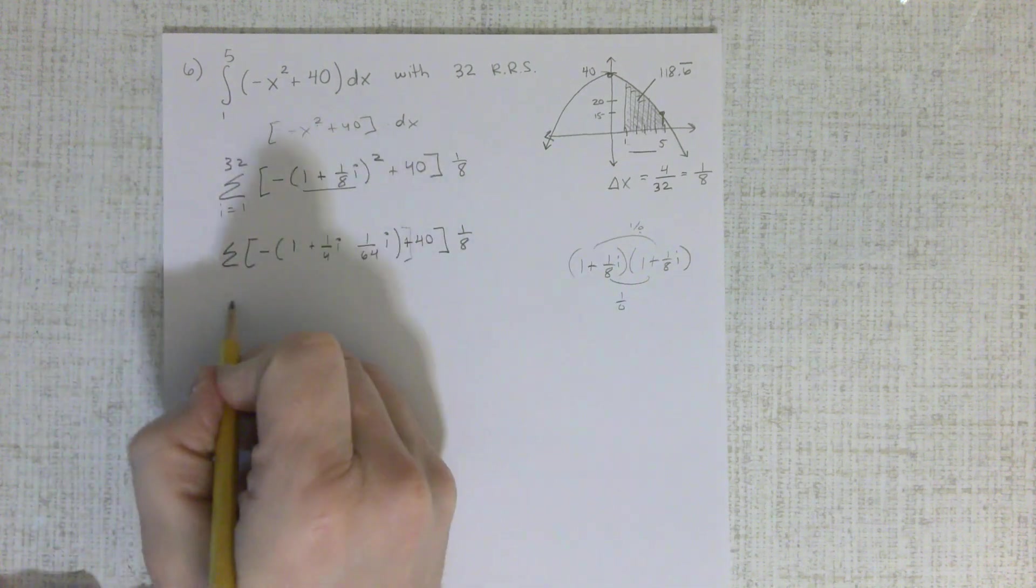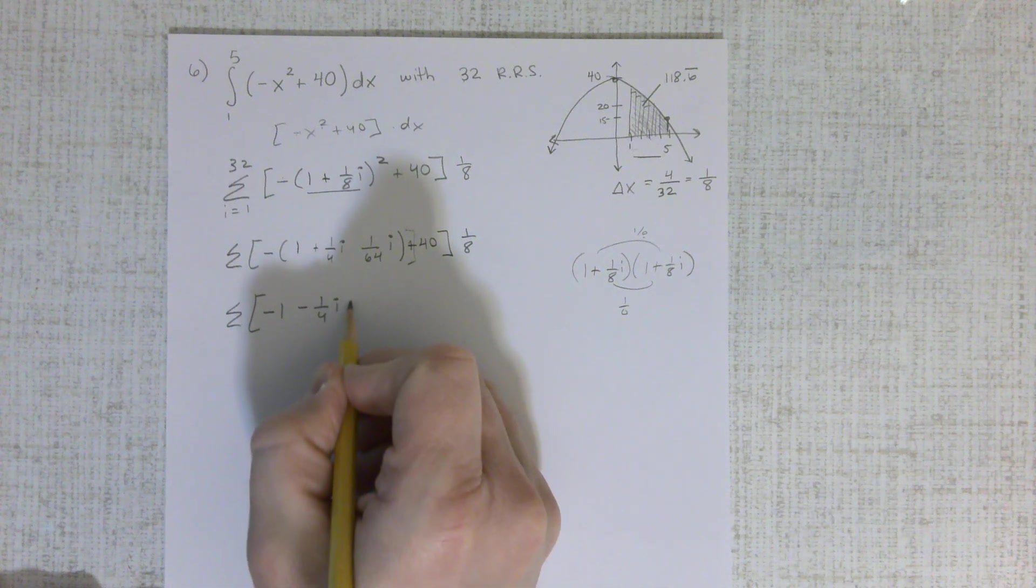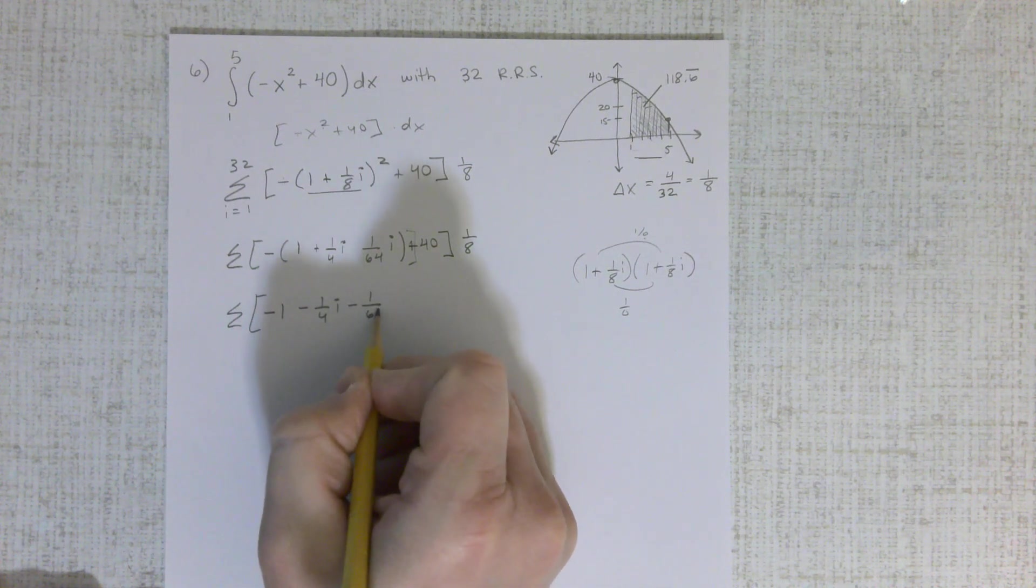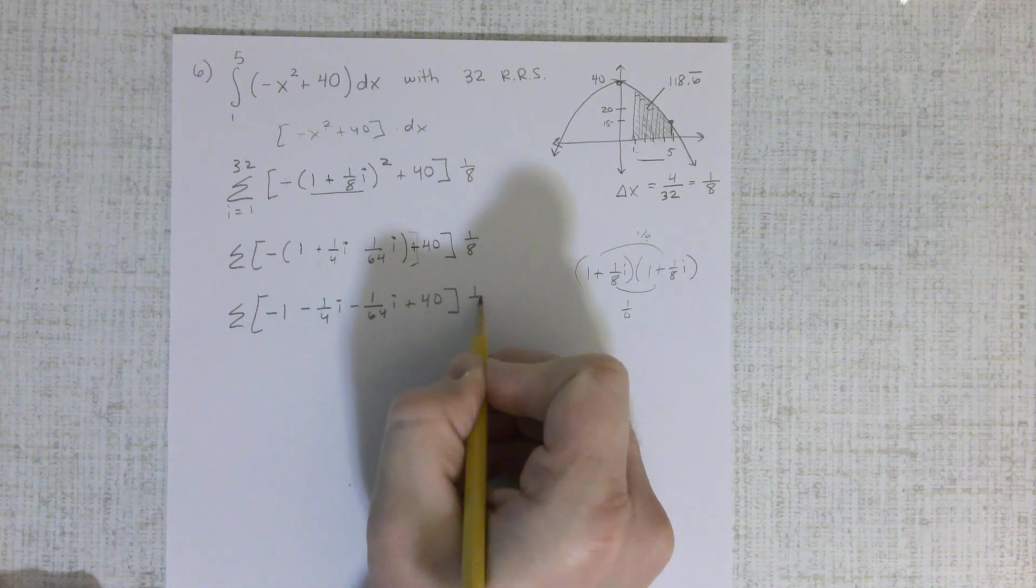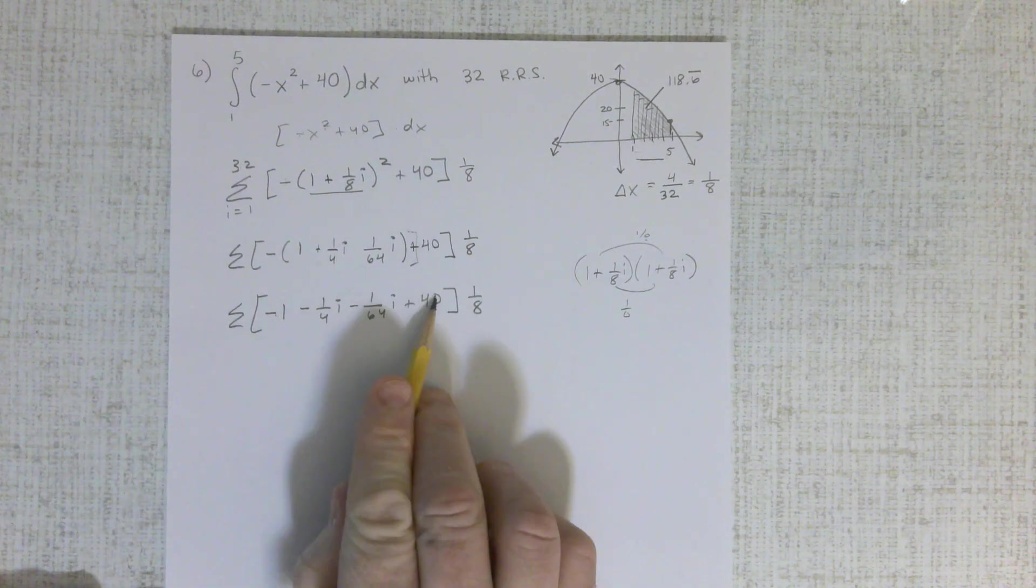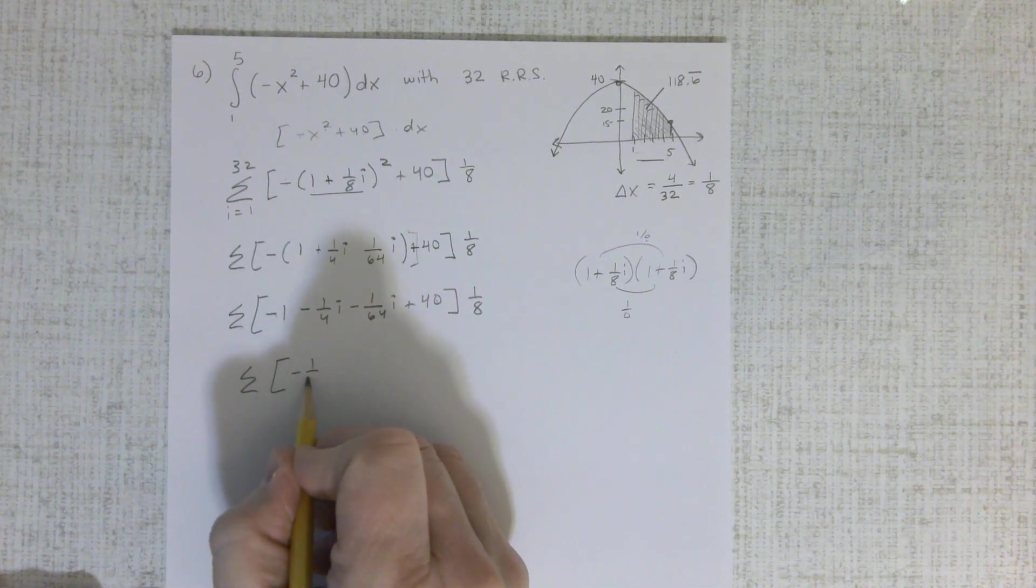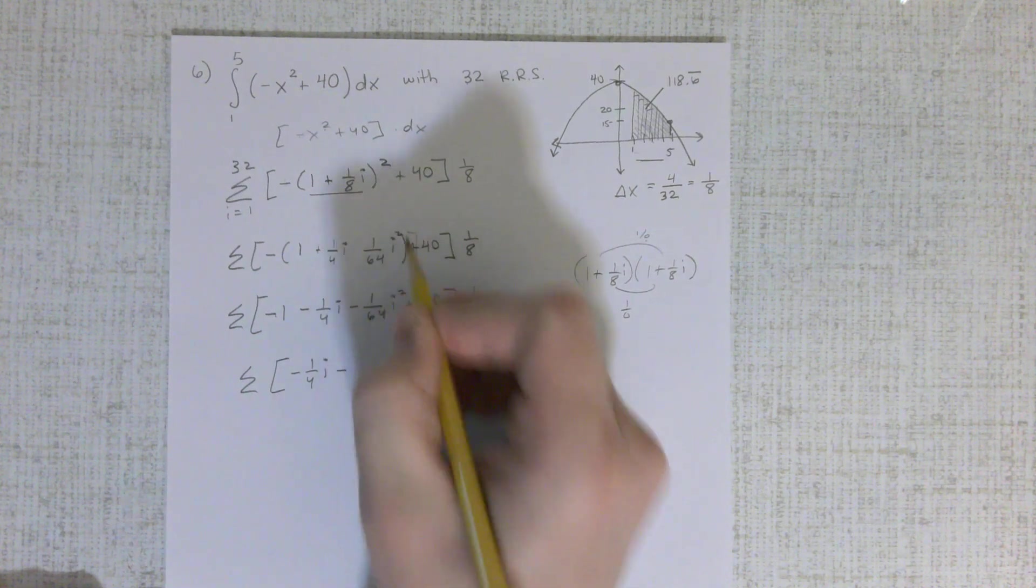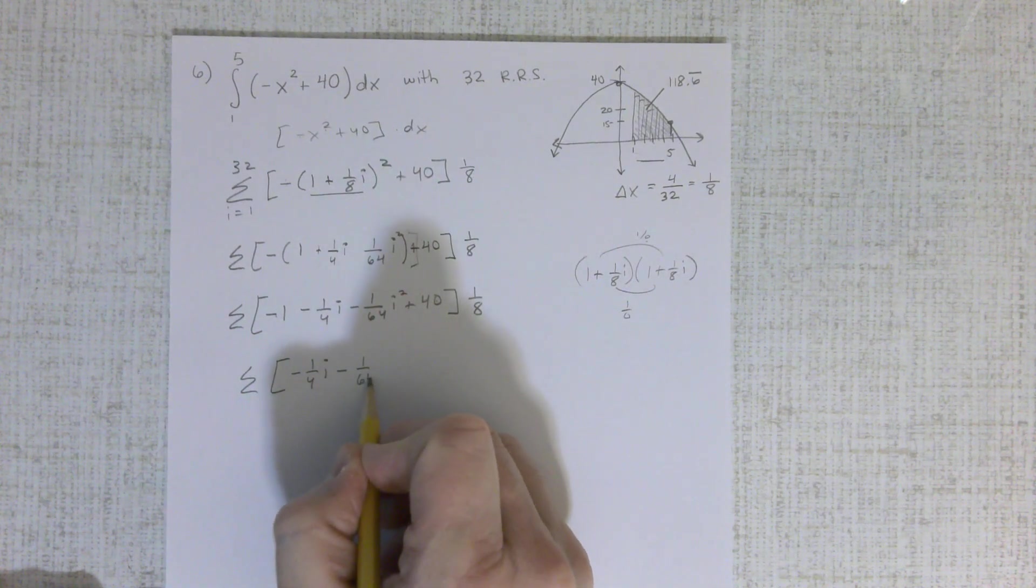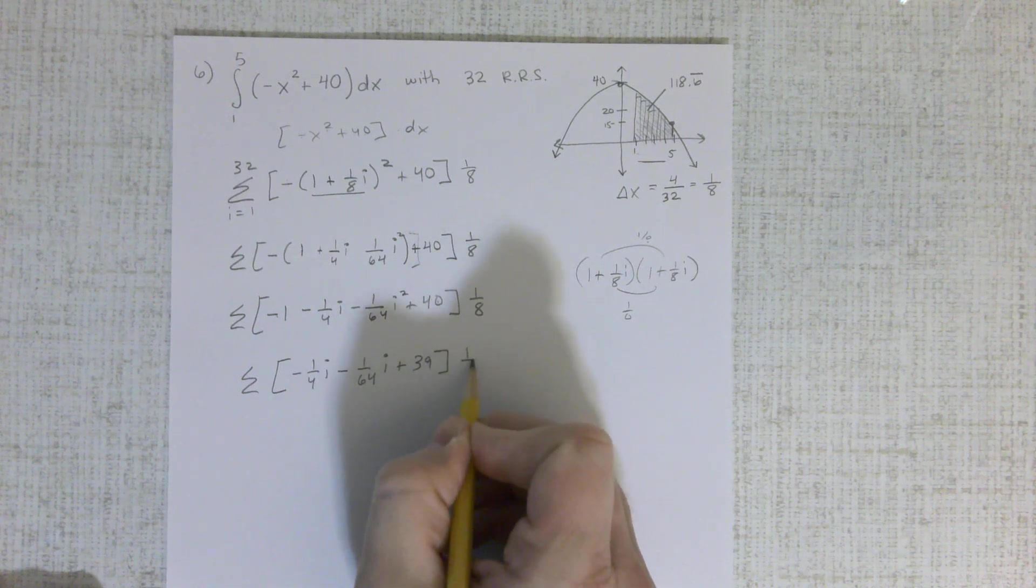Let's run that negative through there just to clean it up. It's real easy to lose track of stuff, so you have to be extremely careful on these. Why don't we put this with that? Let's see here. That would be a negative 1 fourth i minus, this is i squared right there, minus 164 i squared plus 39 times 1 eighth.